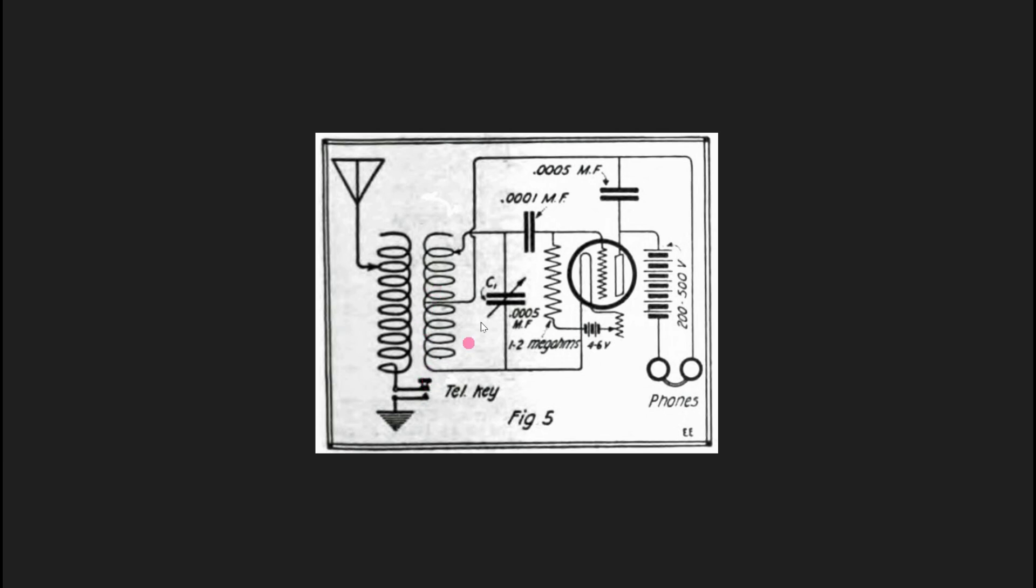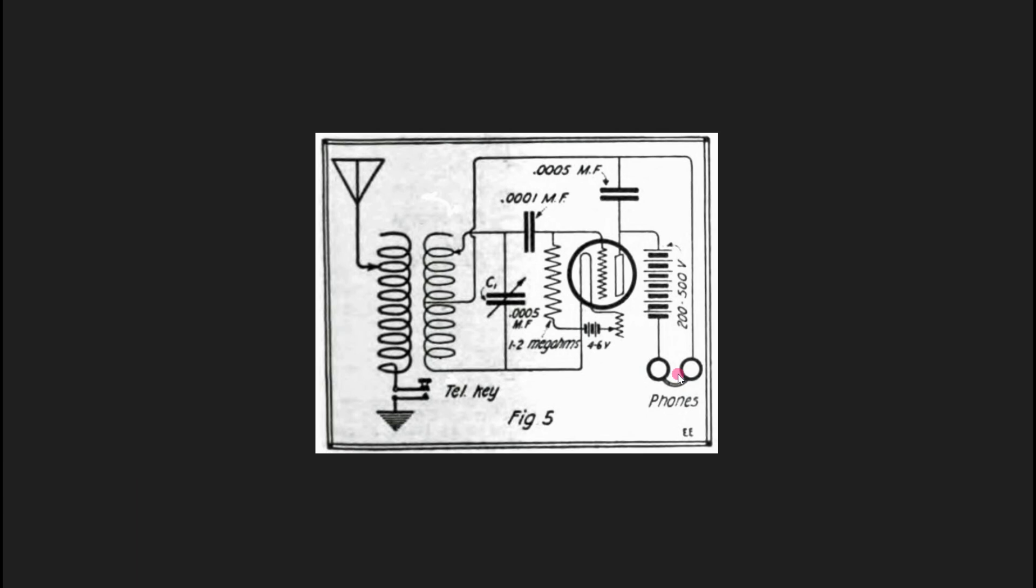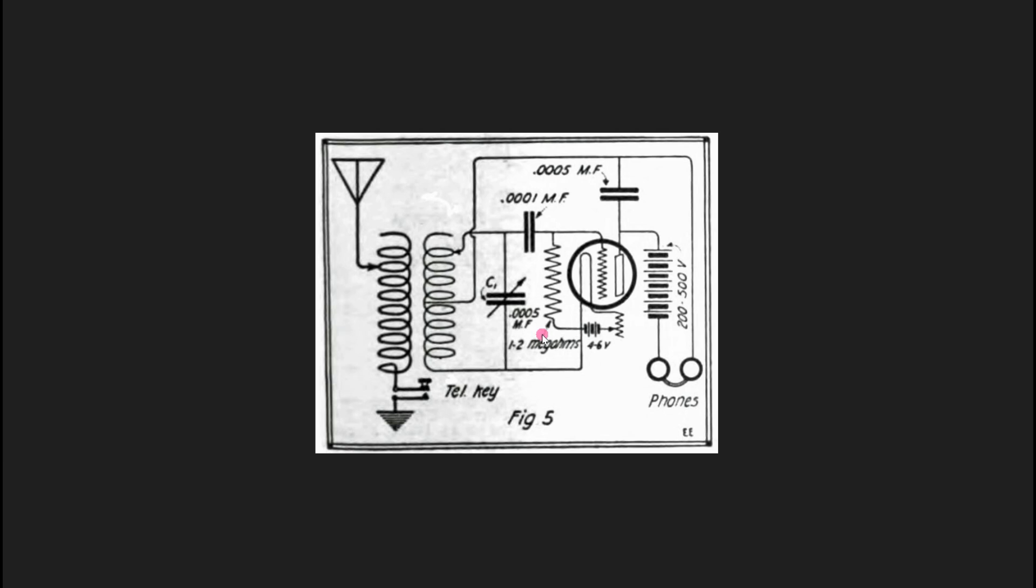So it is a transmitter, a CW transmitter. But notice they've also got some headphones. So with this grid leak, this could also detect CW transmissions in a direct conversion manner. So when a CW signal is strong enough, it combines with the Hartley oscillator. And you get the beat note in the phones. So here you go, a single tube transmitter receiver.